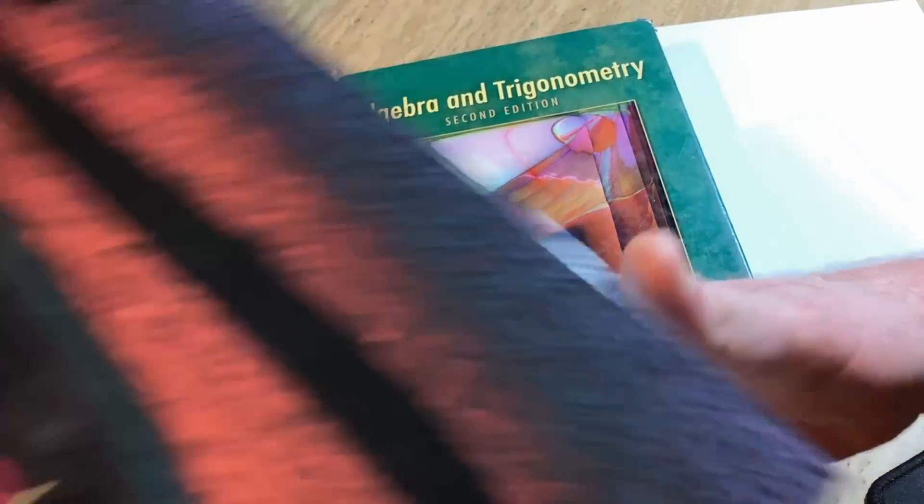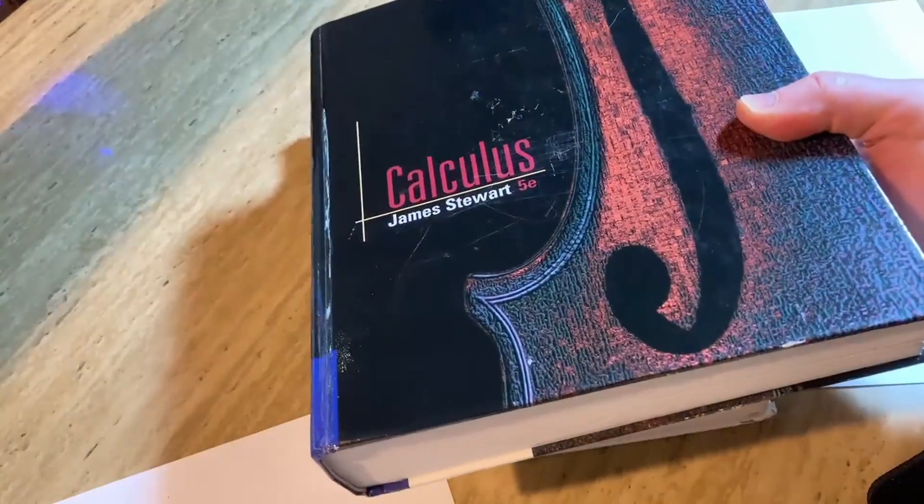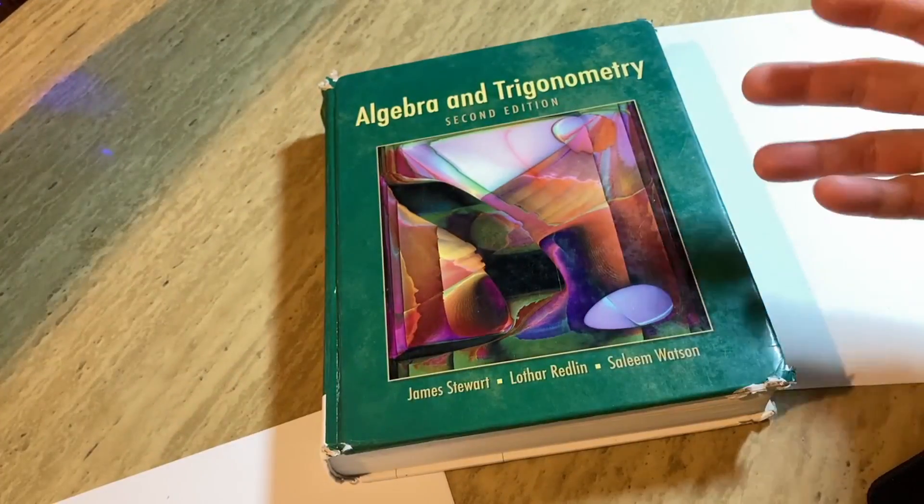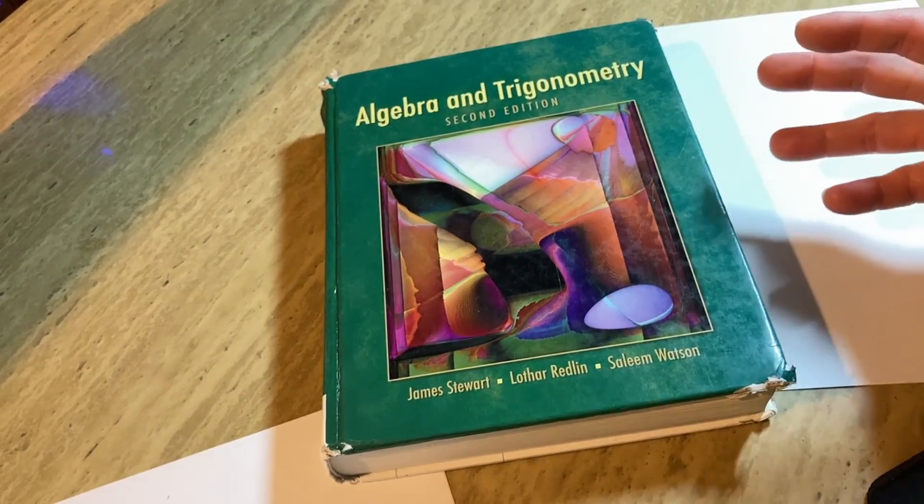He was a Canadian mathematician and I'm pretty sure he became a millionaire because of his math books. He's one of the few people who became a millionaire from writing math books. Who does that? James Stewart does. The legendary Canadian mathematician.